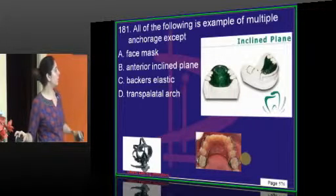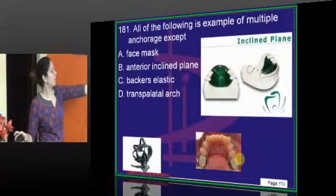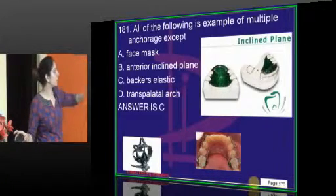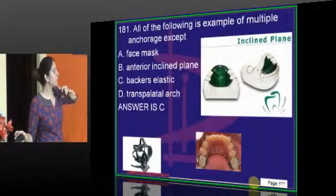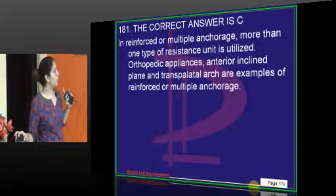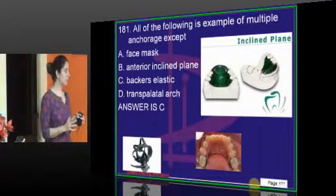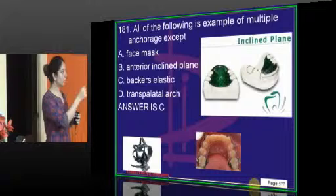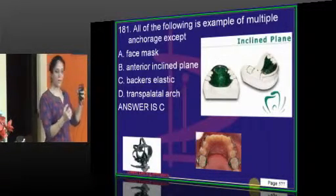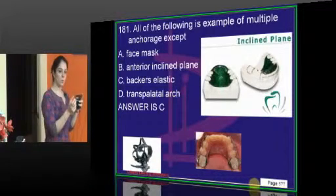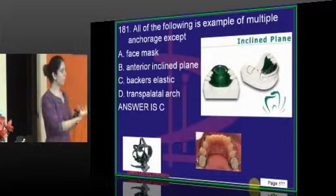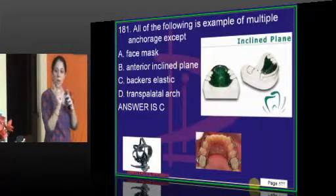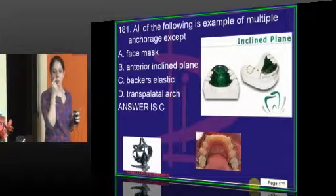All of the following are examples of multiple anchorage except Baker's Anchorage — do not confuse this with Baker's Elastic. Intermaxillary elastic is called Baker's Anchorage. Baker's Anchorage is intermaxillary because the elastic goes between both jaws — equal and opposite — taking anchorage from both jaws, making it multiple anchorage. Face mask, incline plane, and transpalatal arch all take anchorage from only one arch or jaw. Baker's Anchorage is the only one that takes anchorage from both jaws.